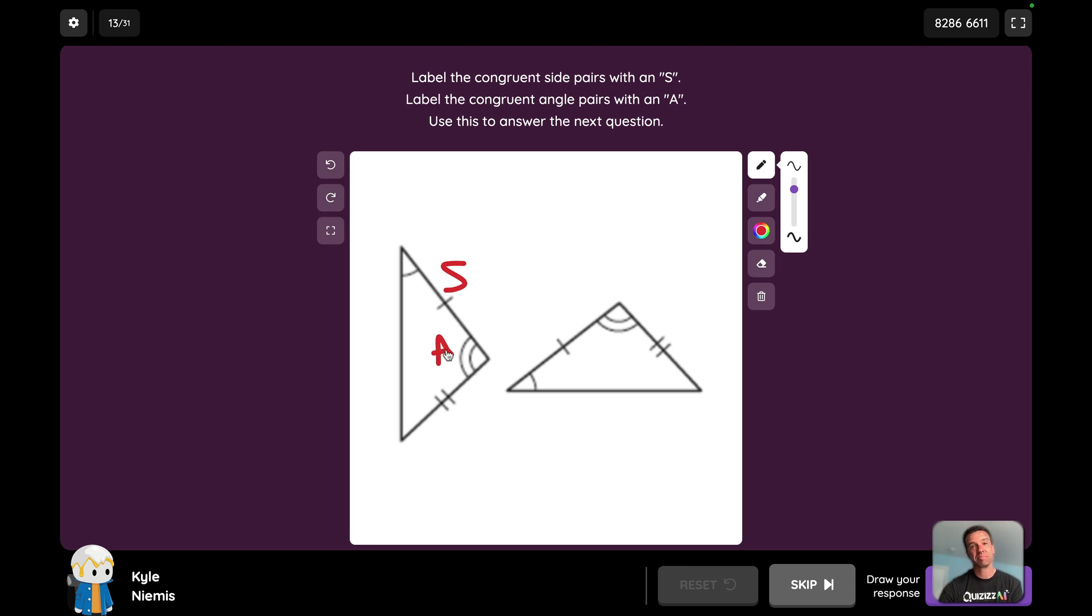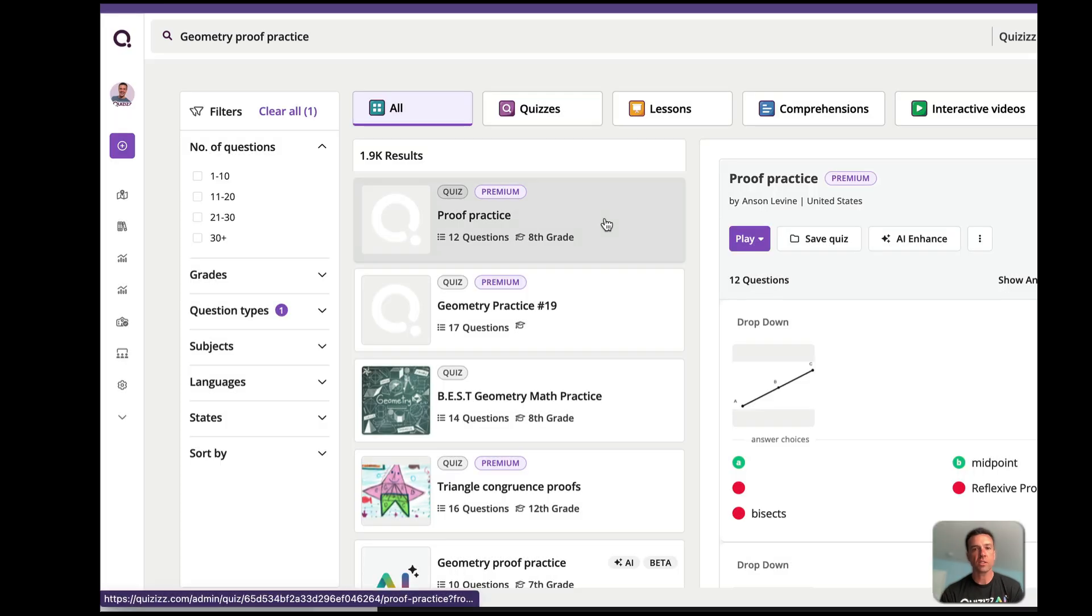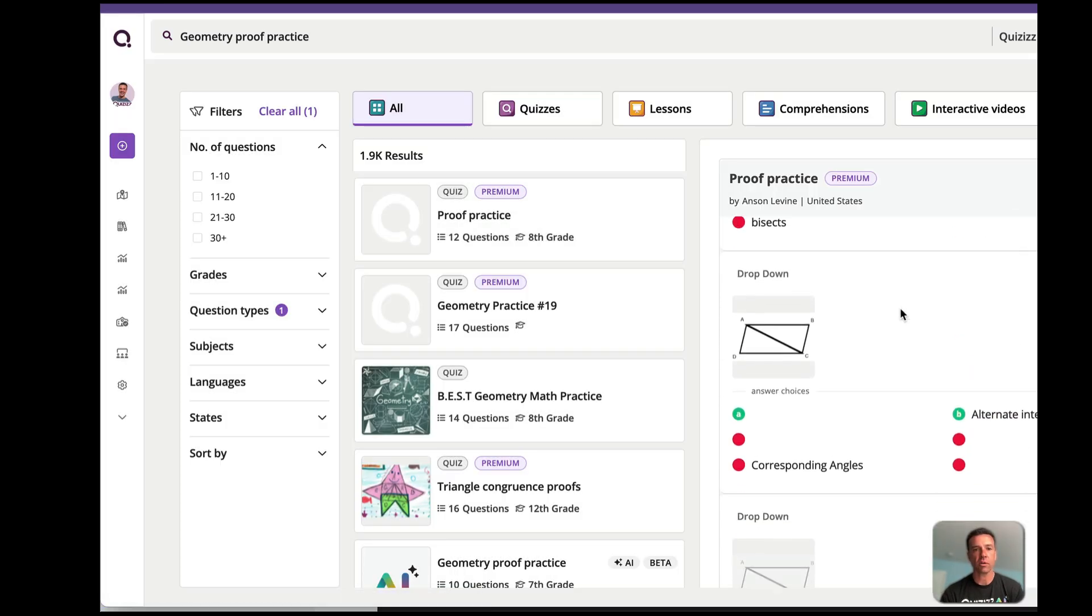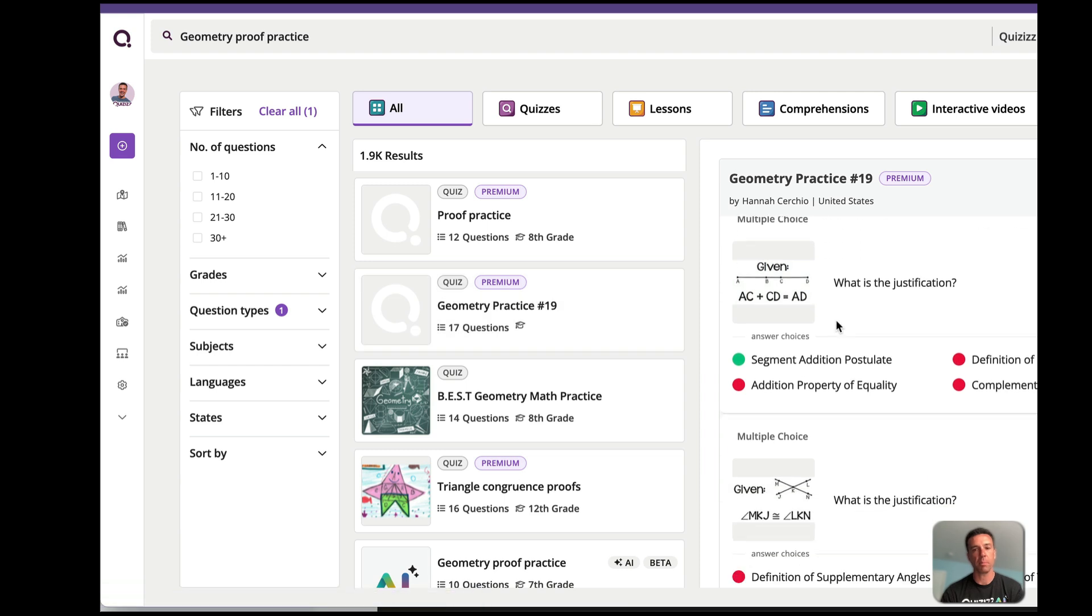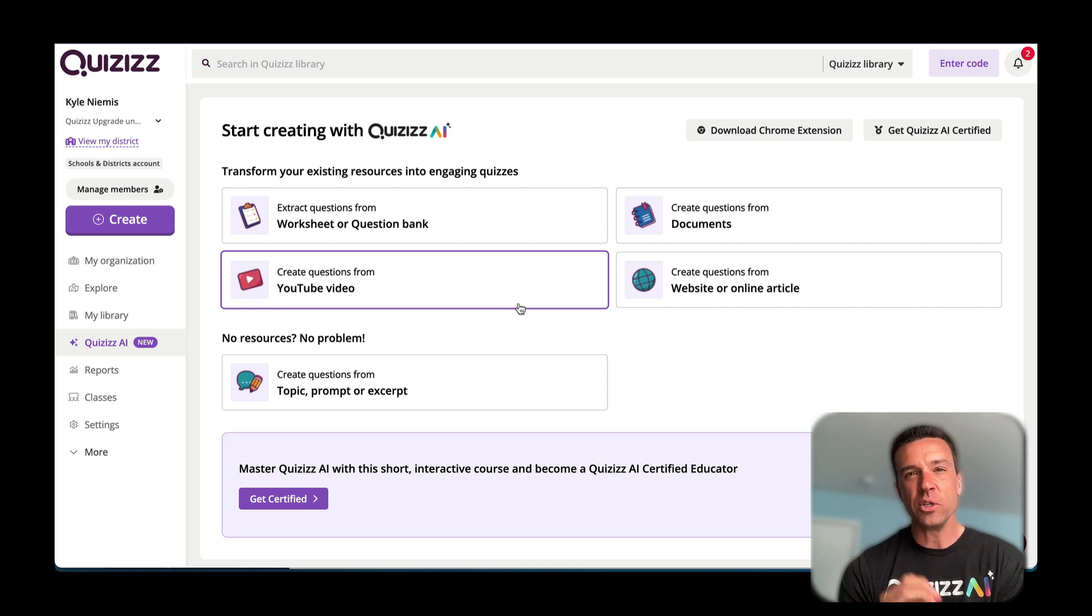Now I need you to know this: everything I just showed you, you can make yourself from scratch, but you don't have to make it yourself. Quizizz has thousands of pre-made activities. Look, if I search for a certain topic, you'll see it's already probably made. So you can grab plenty of stuff from other people and mix and match and make whatever you want your own. You don't need to make anything from scratch if you don't want to.